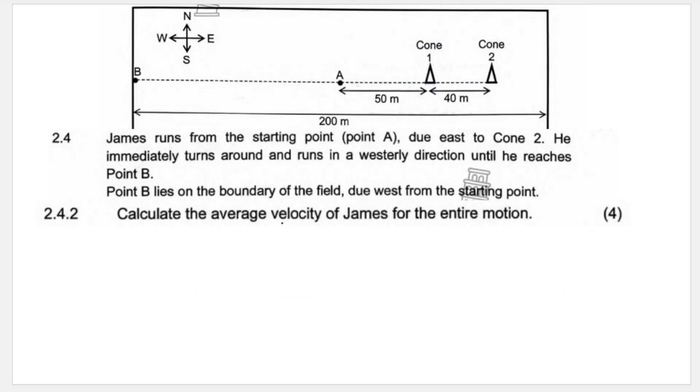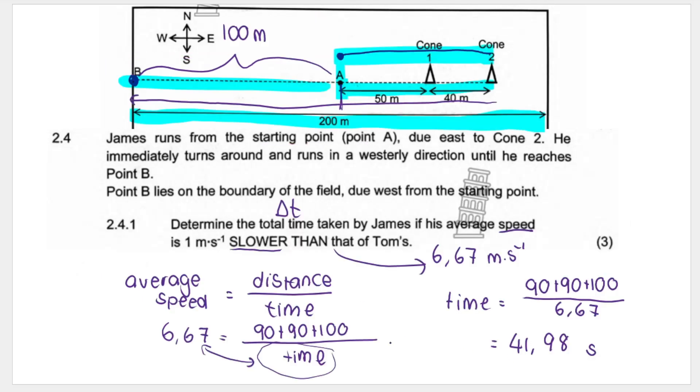Then this question wants the average velocity of James for the entire motion. Remember, velocity considers displacement. Where did James start? James started at point A. And where did James end? He ended at point B. We don't care about all the extra bits in the middle. Displacement is just where did you start, over here, and then it points towards where you ended. So this is James's displacement. How far is that? That's 100 meters to the west. So the displacement of James is 100 meters west.